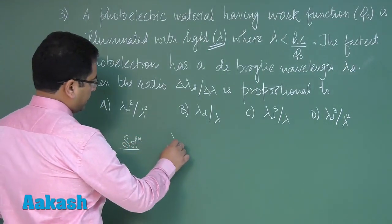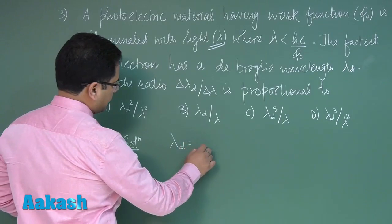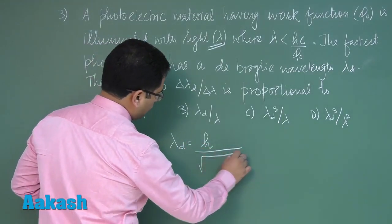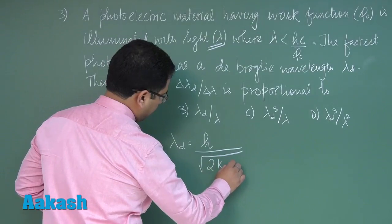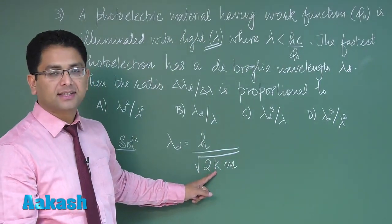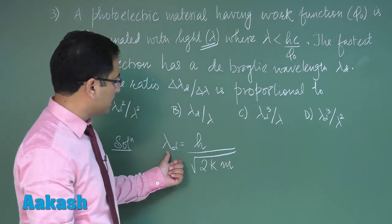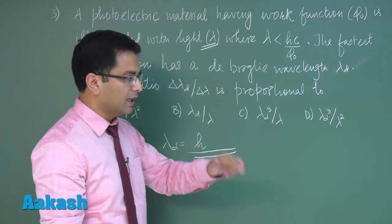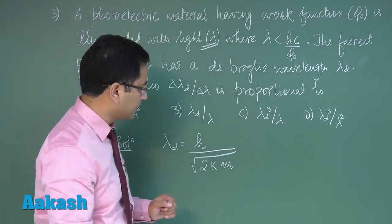The de Broglie wavelength is h by p, and that p is root of 2km, mass of electron. K is the maximum kinetic energy, since we're calculating de Broglie wavelength for the electron having maximum kinetic energy.